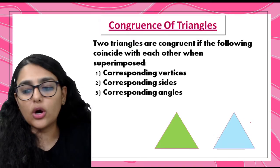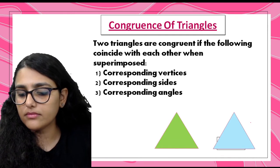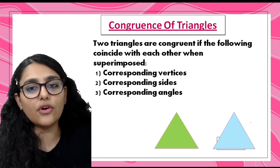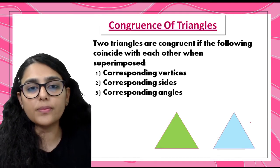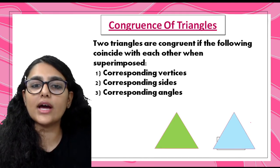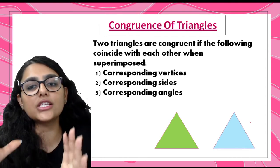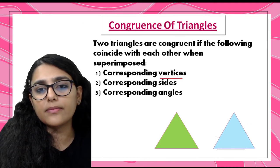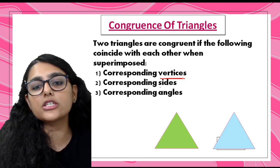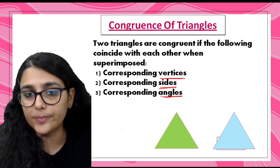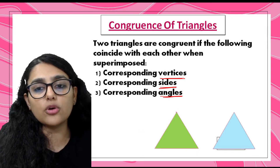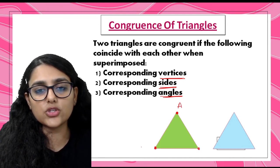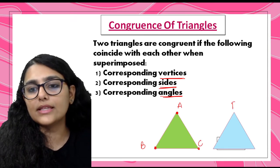Now we come to our major topic - the main chapter - congruence of triangles. Two triangles are congruent if the following coincide with each other when superimposed. Basically, they have equal corresponding vertices, corresponding sides are equal, and corresponding angles are equal. Vertices are the corner points where two lines meet. One triangle has three vertices, three sides, and three angles.